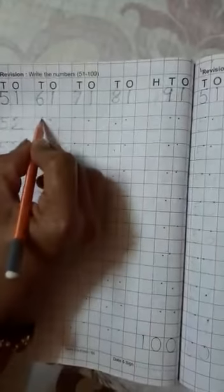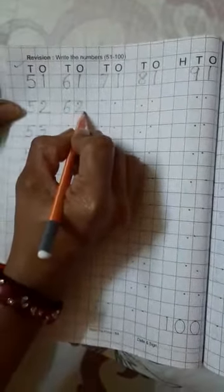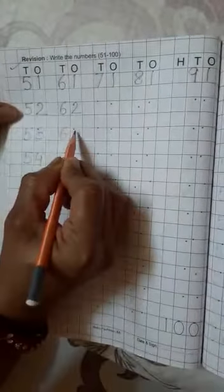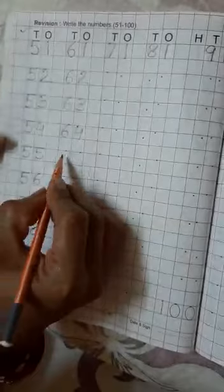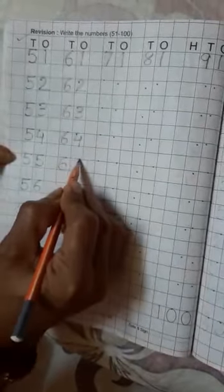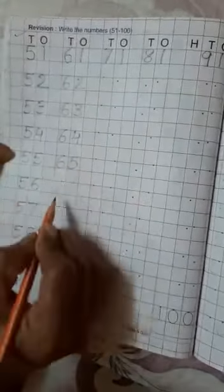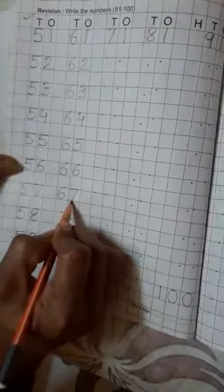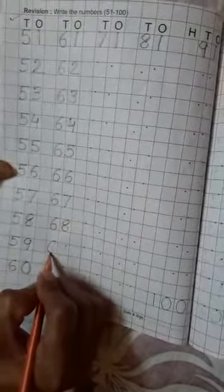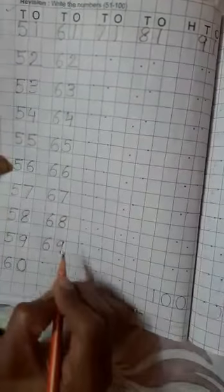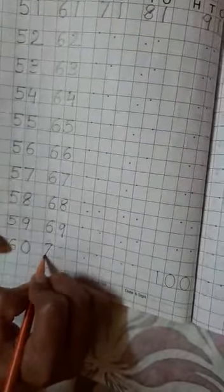अब 60 की लाइन के बाद हम स्टार्ट करेंगे. 61 की लाइन. 6 की लाइन. 6, 1, 61. 6, 2, 62. 6, 3, 63. 6, 4, 64. 6, 5, 65. 6, 6, 66. 6, 7, 67. 6, 8, 68. 6, 9, 69. 7, 0, 70.